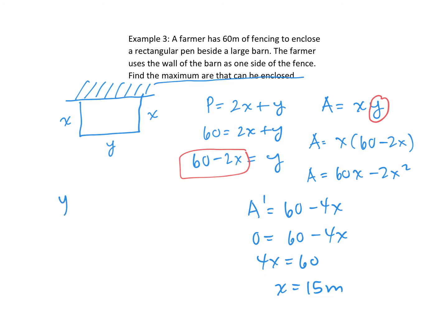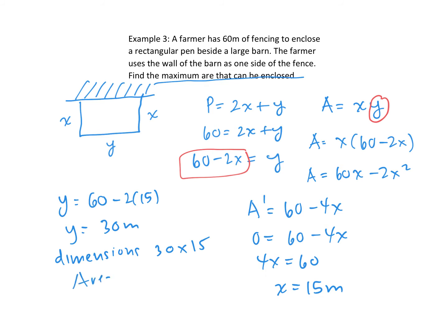If x is 15 meters, then y equals 60 minus 2 times 15, so y equals 30 meters. The dimensions are 30 by 15, giving a maximum area of 450 meters squared. Make sure you answer the question — it says find the maximum area, so include that in the solution.